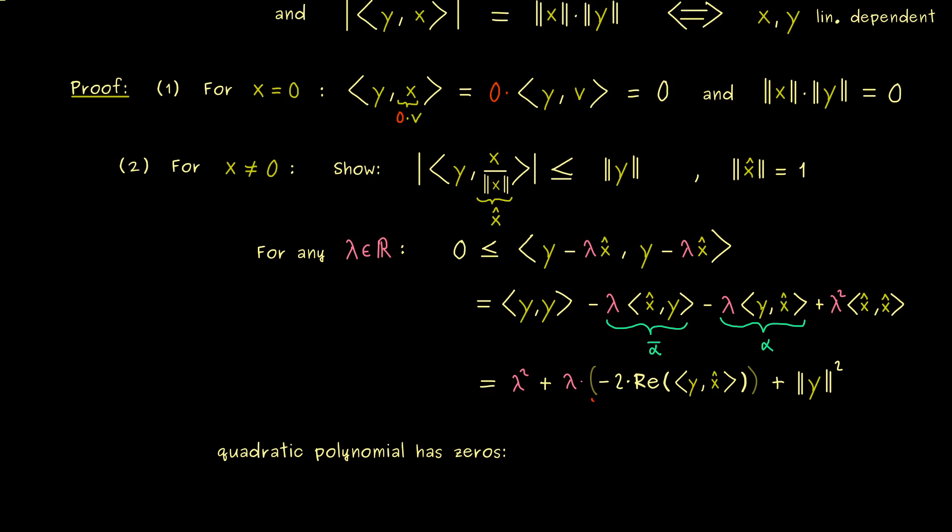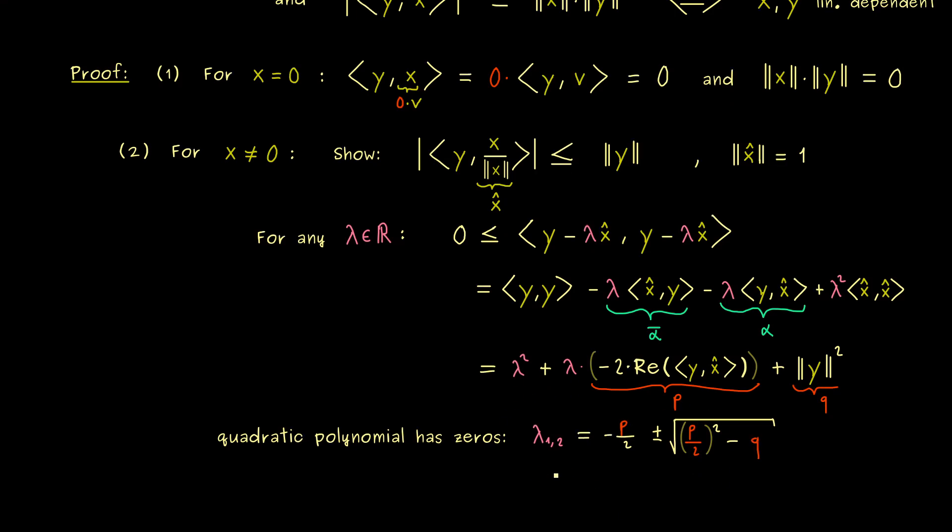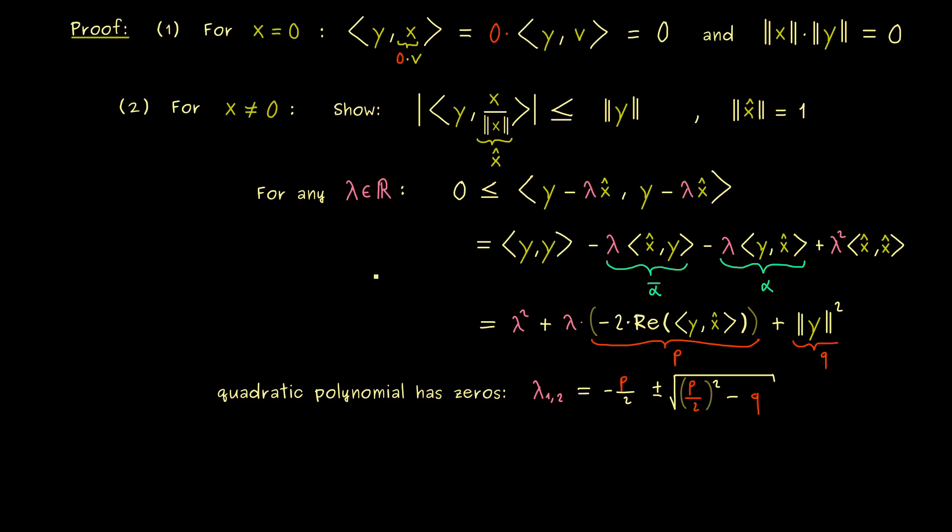And there you should know that such a polynomial has zeros, at most 2. And indeed this formula is not hard to remember if you call the constants here p and q. Then the general solution for the two zeros lambda 1 lambda 2 is given by minus p half plus or minus a square root. And inside this square root we have p half squared minus the constant q. Now this is a general formula you should have in mind. And now we can use it to solve our problem here.